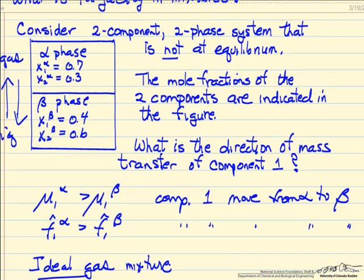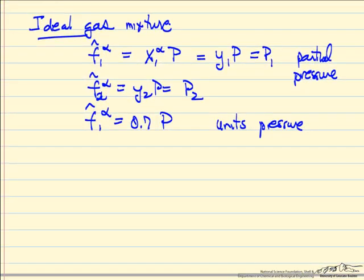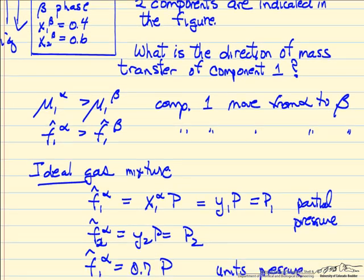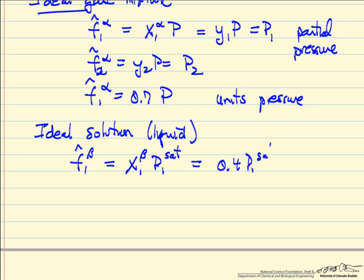Now, assuming the beta phase is a liquid phase, we look at the simplest case: an ideal solution. For an ideal solution, we calculate the fugacity relative to the saturation pressure for the pure component. Component one in the beta liquid phase has fugacity equal to the mole fraction of component one in the liquid phase times the saturation pressure of component one — in this case, 0.4 times P₁_sat.